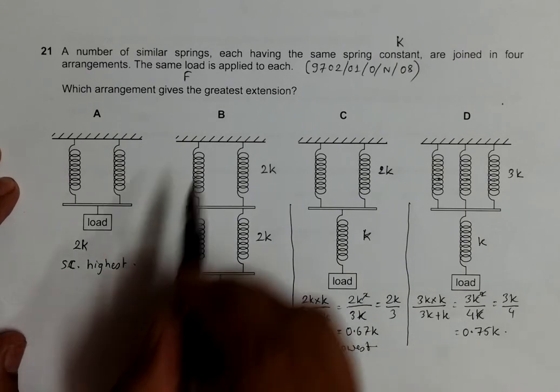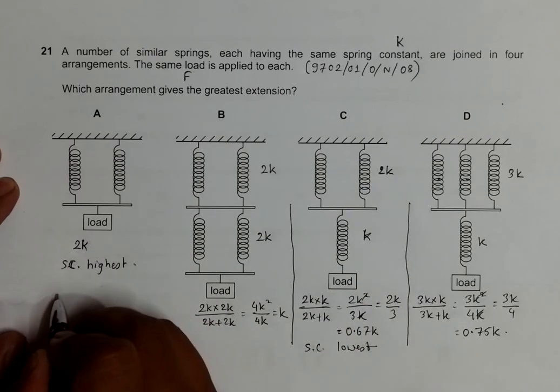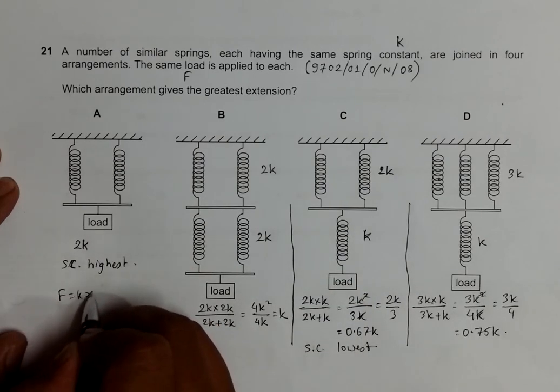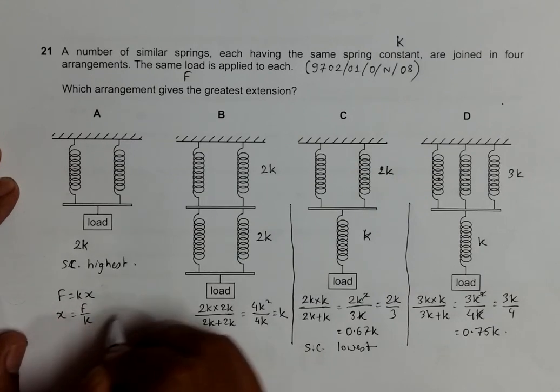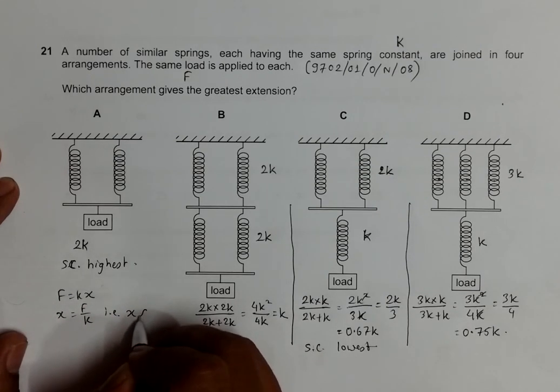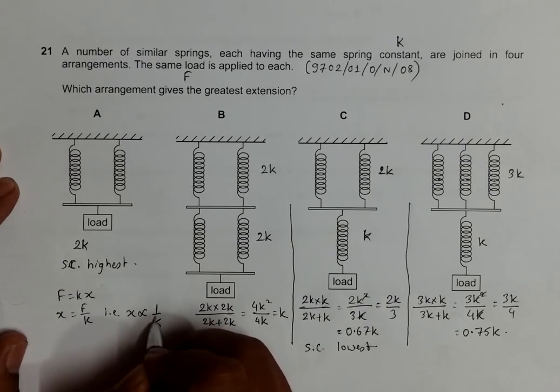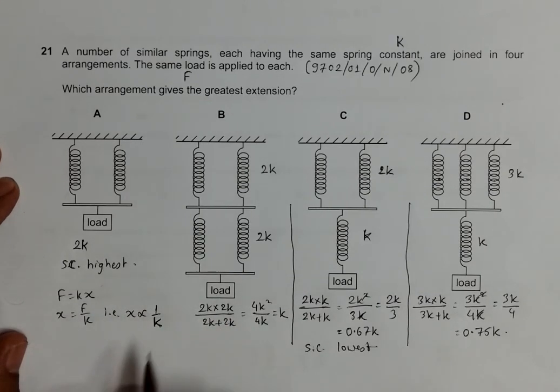Now the extension, as we know from the equation F equals KX, so the extension is equal to F divided by K. That is, extension is proportional to 1 over K. So if K is lowest, the arrangement will have the greatest extension.